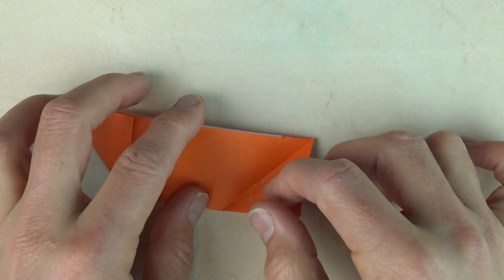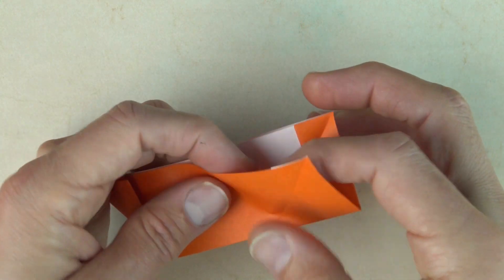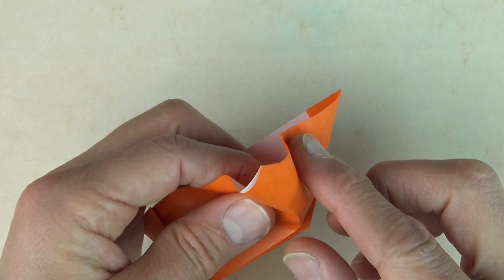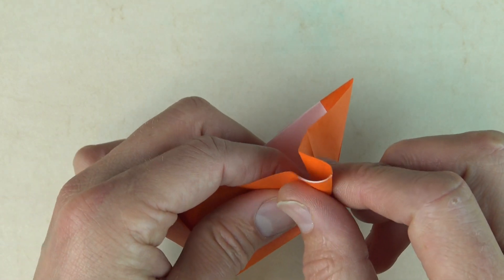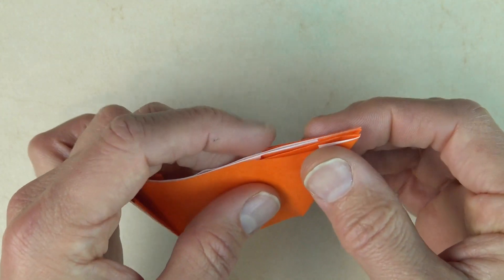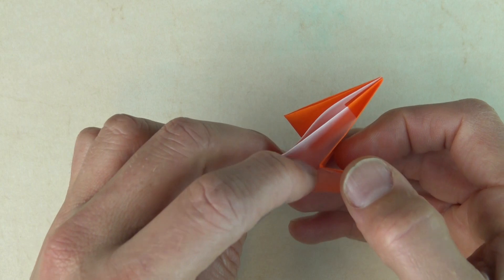Now unfold this flap. Open here. And we're going to reverse fold it. So just push this point in. And pinch on the corner. And flatten. So there's the reverse fold.